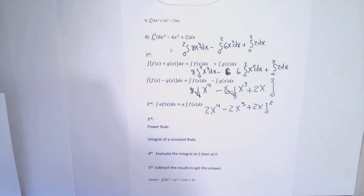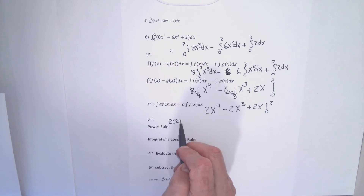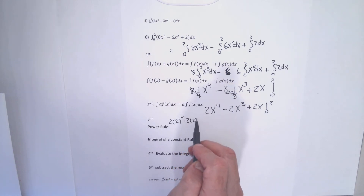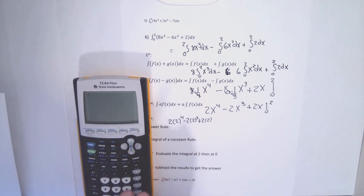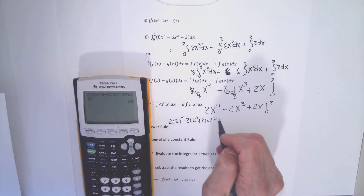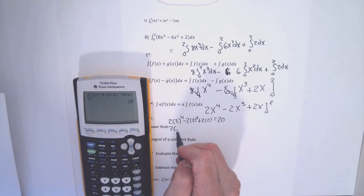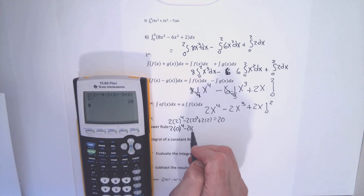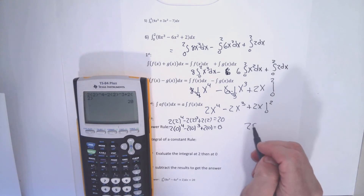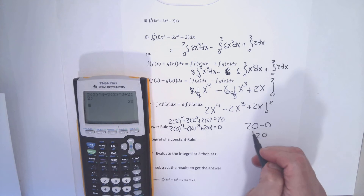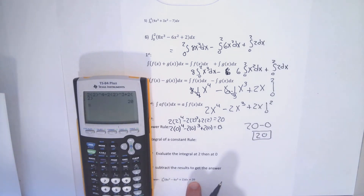Even when I keep the numbers small, sometimes the algebra gets involved. I plug the top number in: two times two to the fourth minus two times two cubed plus two times two. I do that all on my calculator. This comes out to 20. Then with zero: two times zero to the fourth minus two times zero cubed plus two times zero — that's zero. Now subtract: 20 minus zero gives an answer of 20. You absolutely can check on your calculator.